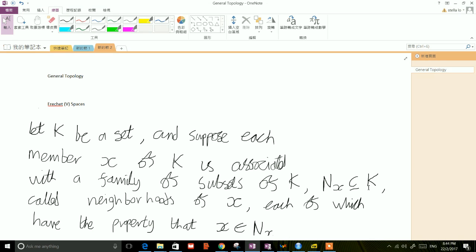So basically, all we're saying is that we have a set K of points, and each point is associated with a family of neighborhoods, and each of those neighborhoods is a subset of the space. That's all there is to this kind of Fréchet V-space concept.